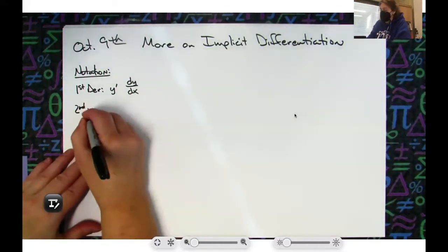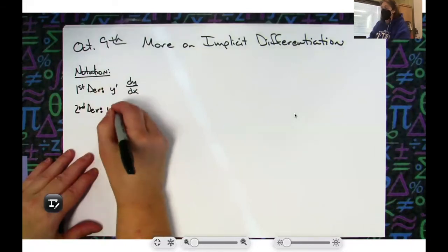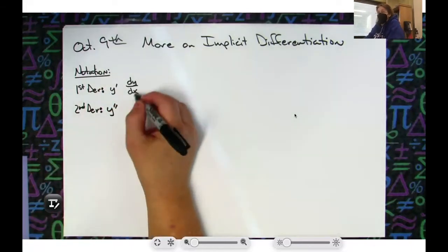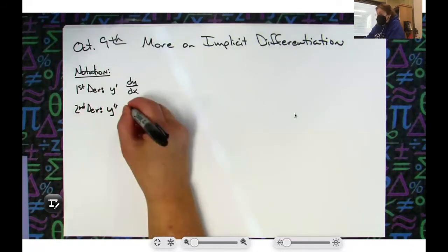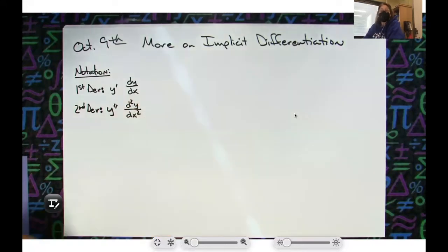This dy over dx looks like d squared y over dx squared. So that's what a second derivative looks like. Third derivative I just put threes in there, fourth derivative I put fours in there, so that you recognize the derivatives.